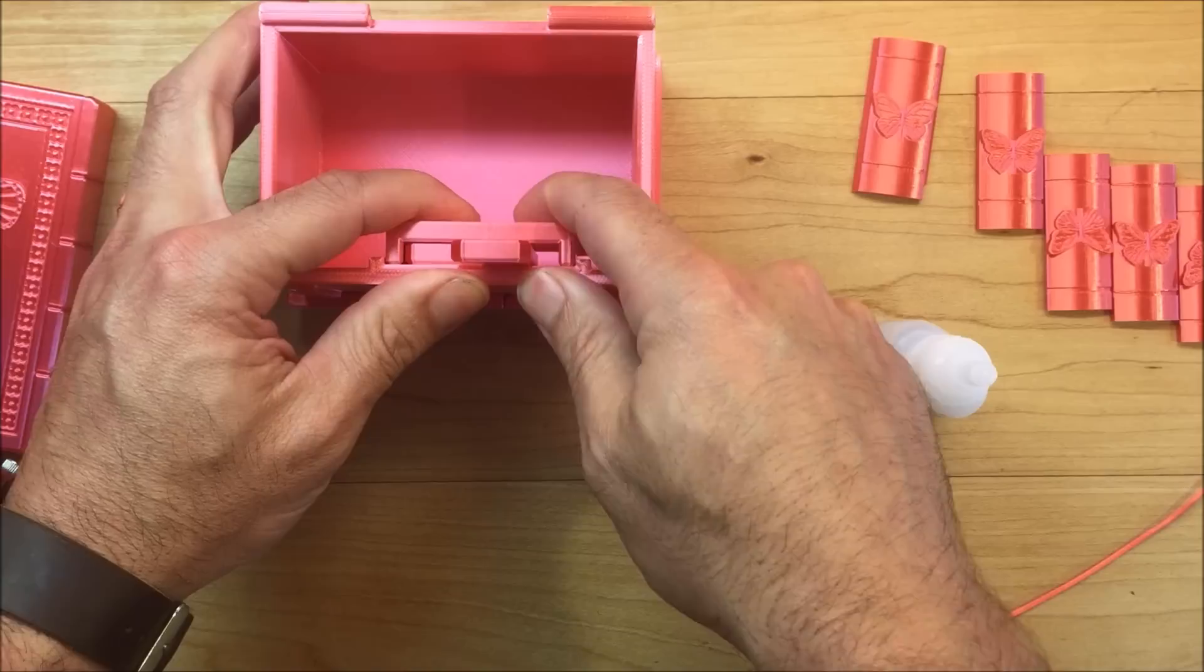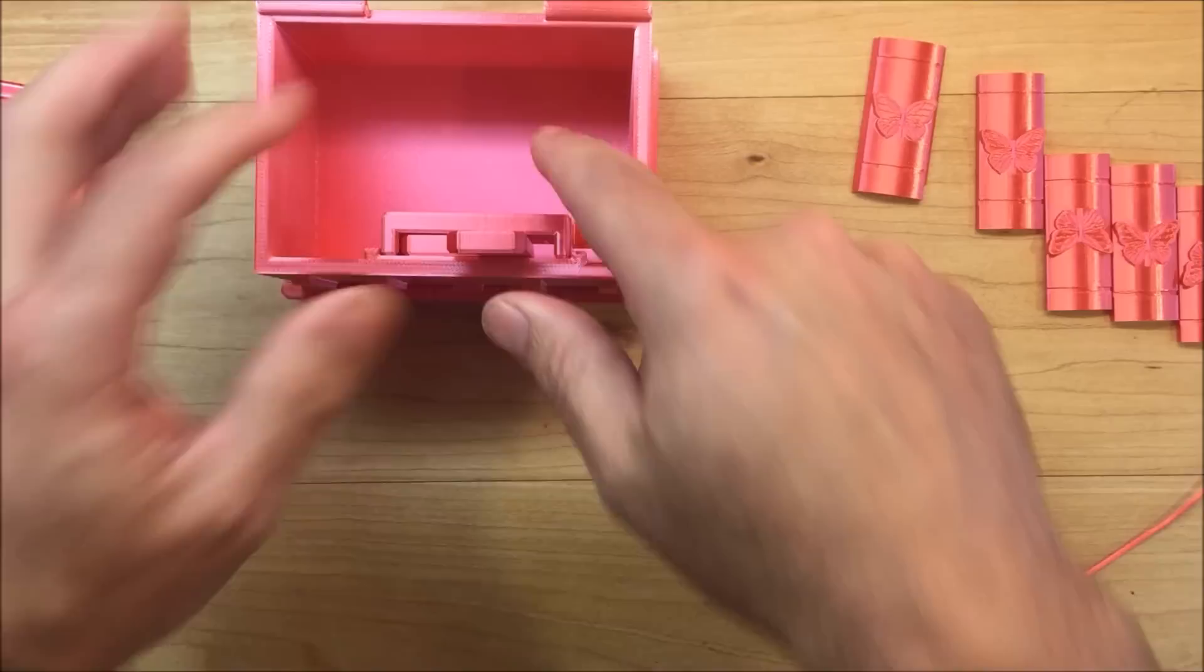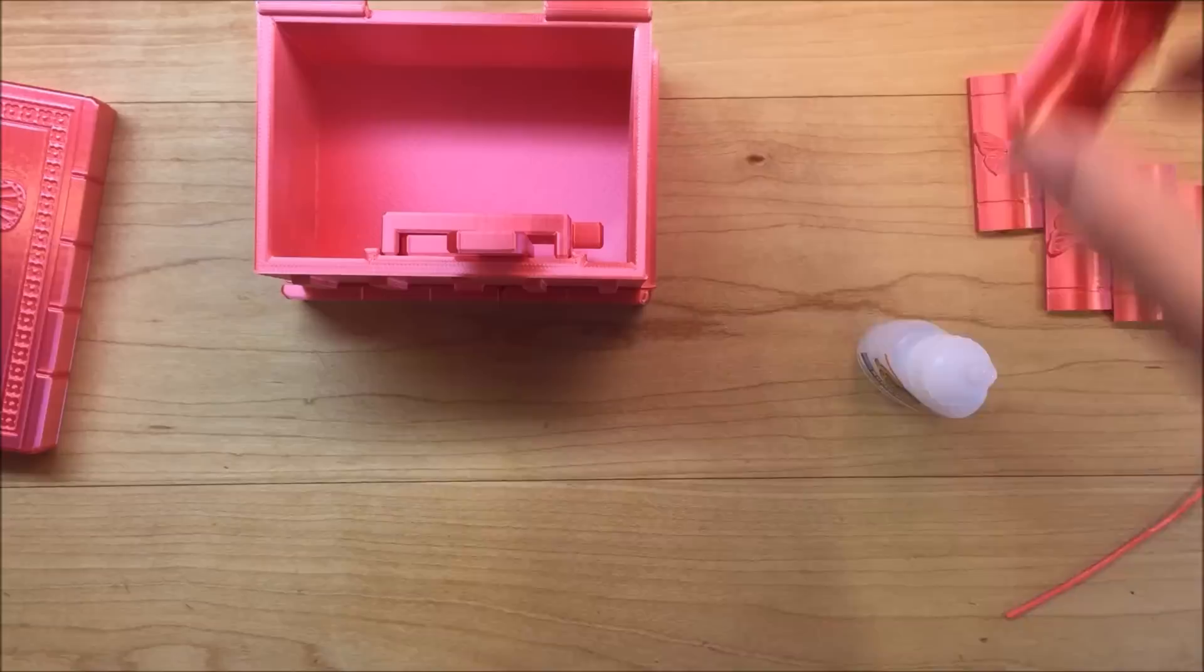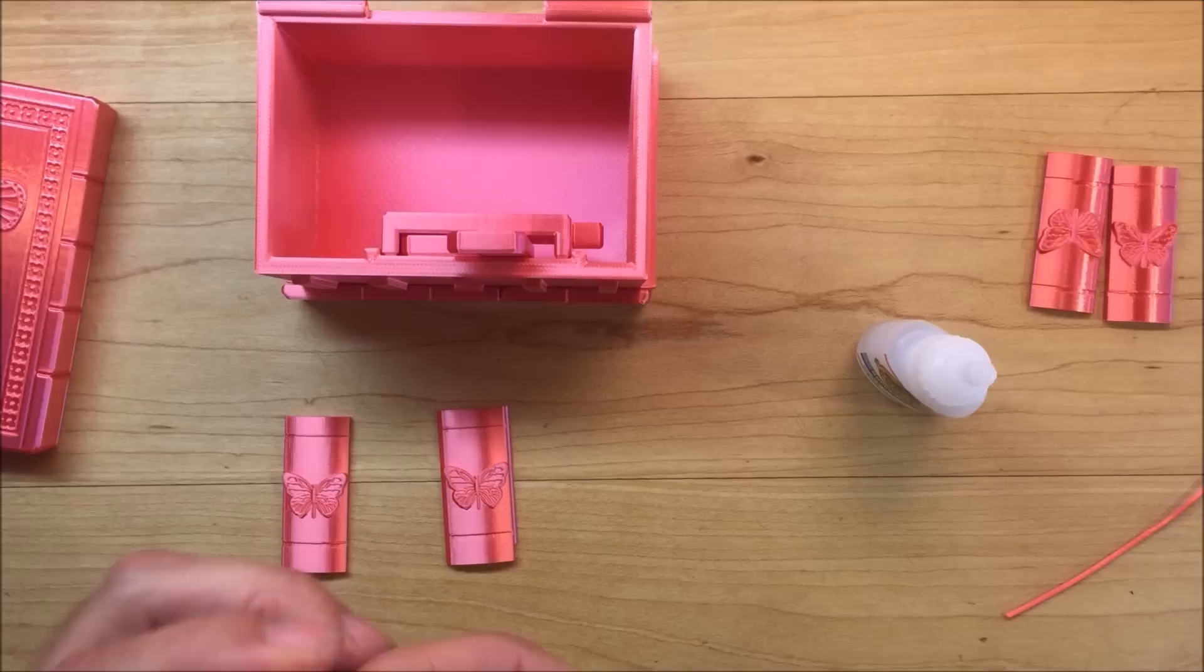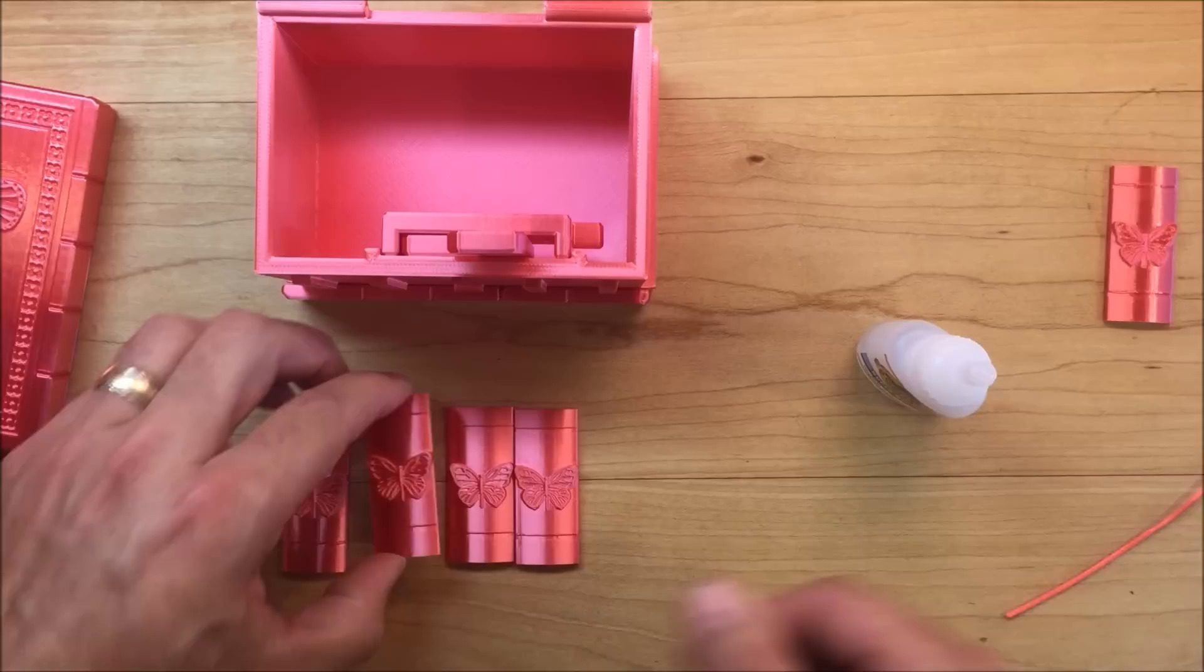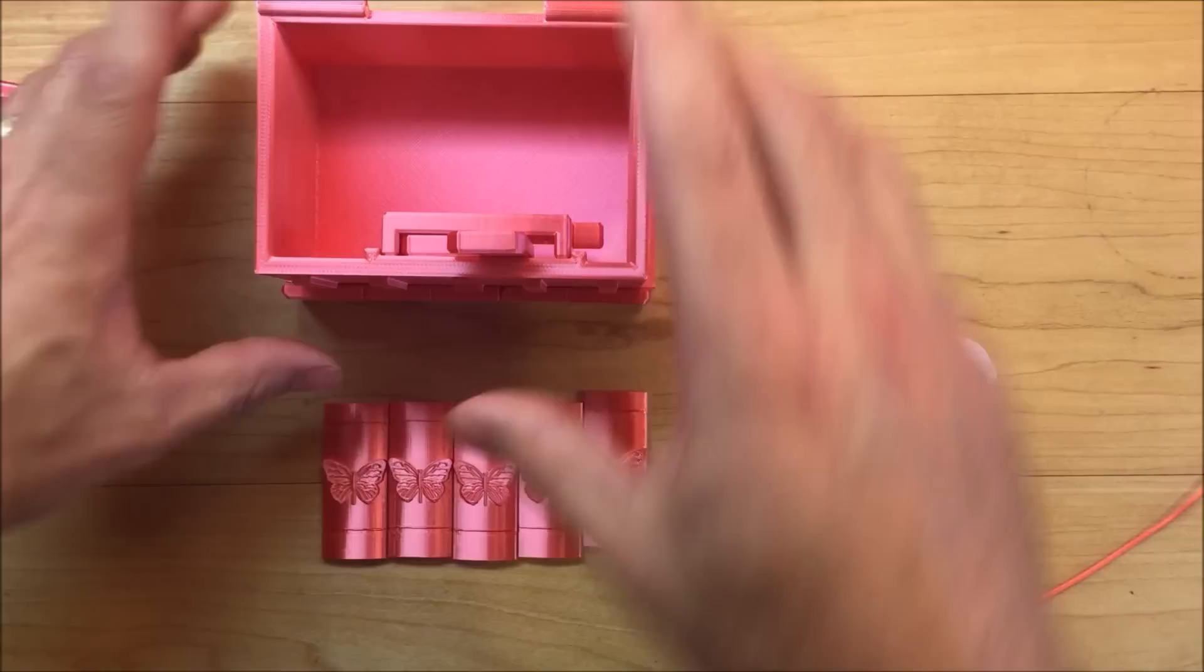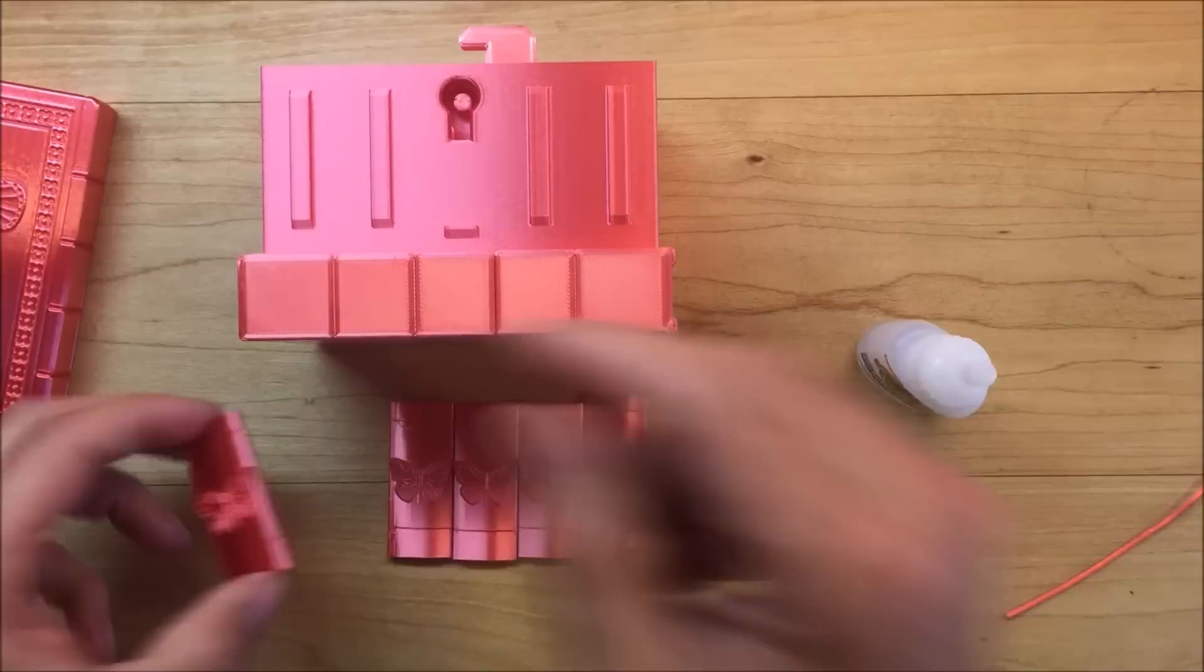Next we'll glue on the front tiles. What I normally do is position them like they are going to be positioned on the box so that I don't make a mistake, because they're all different.